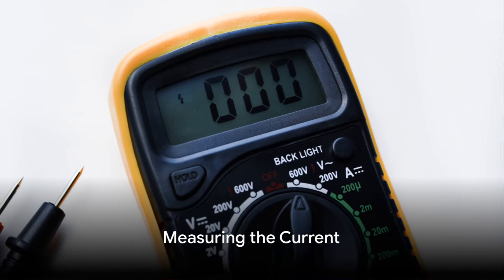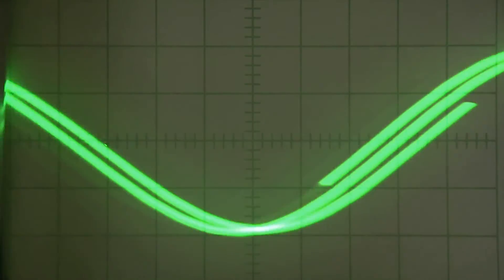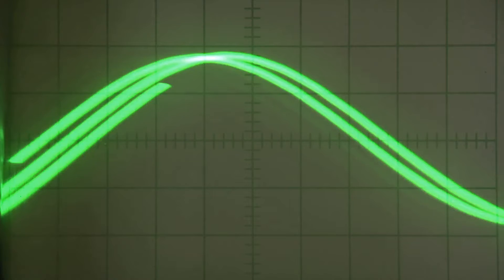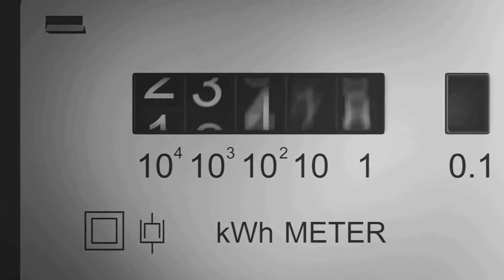Once everything is securely connected, turn on the power supply. The loop simulator will now generate a current within the 4 to 20 milliampere range. The multimeter's display will show the current flowing through the circuit.